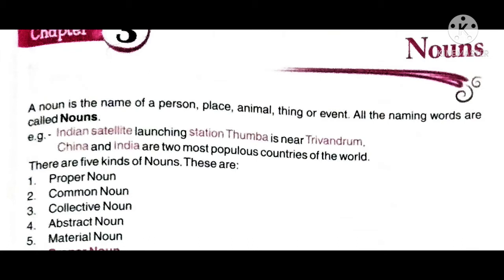Indian satellite launch station Thumba is near Thiruvananthapuram. Here, Indian satellite, station Thumba, Thiruvananthapuram — these all are names, so these are the nouns. China and India are two most populous countries of the world. China and India are names of countries, that's why they are nouns.